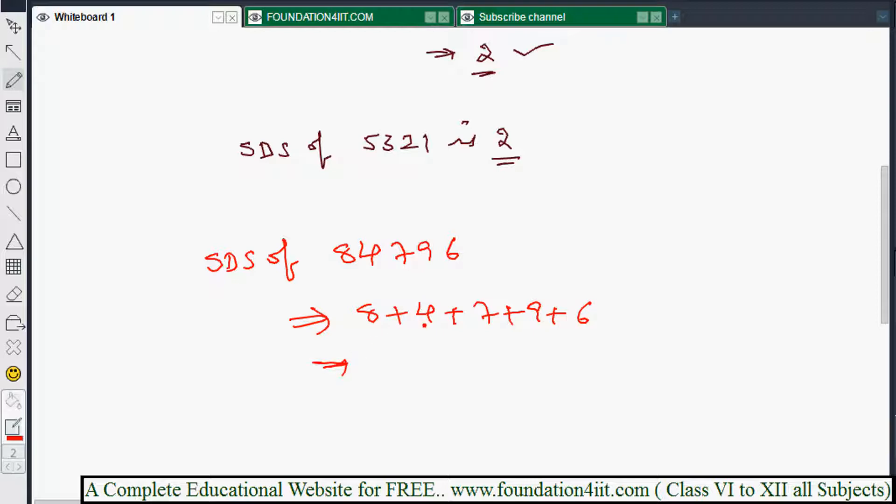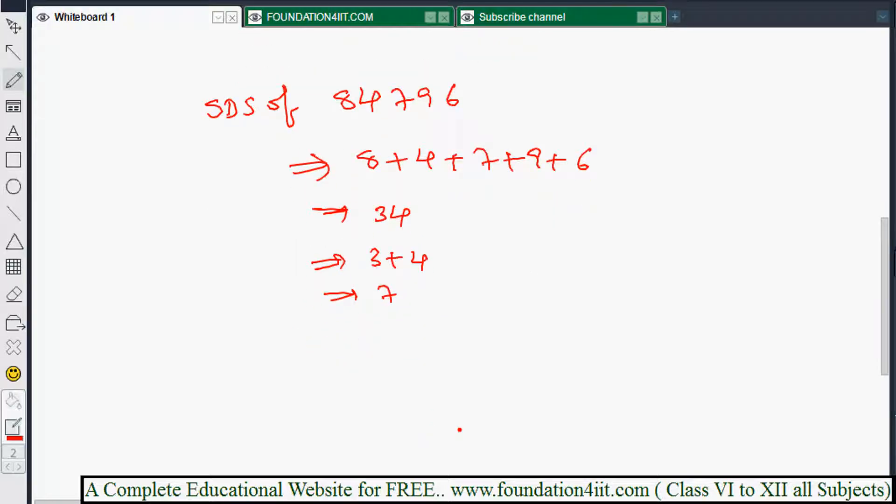8 plus 4 is 12, and 12 plus 7 is 19, 19 plus again 9 is 28, and 28 plus 6, okay, 34. 34 is a two digit number. Again if you add 3 plus 4, you'll get 7. That is a single digit.